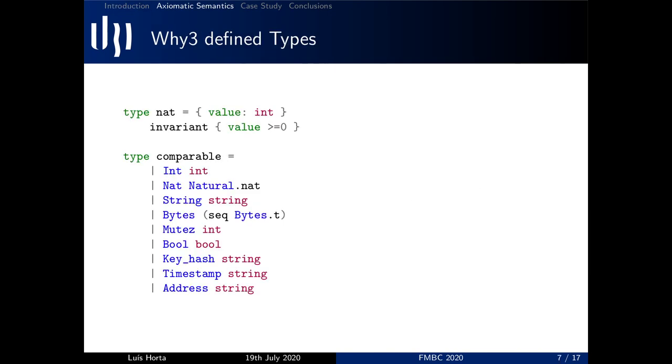Back to the Michelson language, as you well know, it has four primitive types for constants, namely string, natural, integers and bytes. As of version 1.3.0, Why3 supports strings and has a built-in type. These types are almost in a one-to-one correspondence except for type nat and bytes.